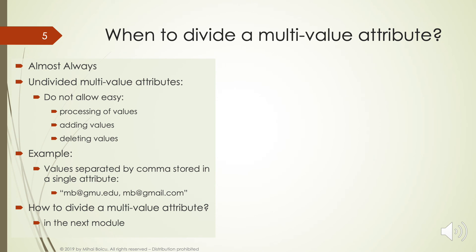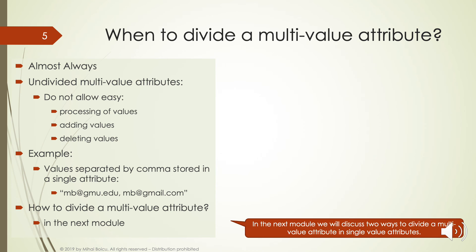When should we divide a multi-value attribute? Almost always, we would like to divide a multi-value attribute, because an undivided multi-value attribute is hard to process and maintain. For instance, to add a new value, delete a value, or process the values one by one, would require text processing to extract individual values from a list stored as a single text.